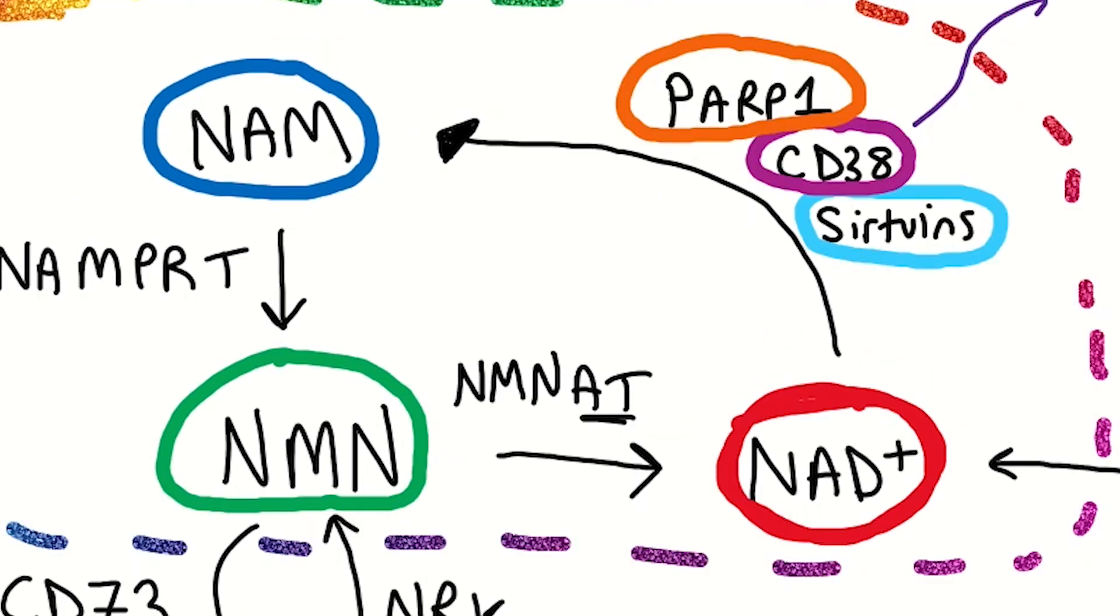As you can also see on this diagram, NAD plus can be consumed by three different enzymes: sirtuins, CD38, and PARP1.